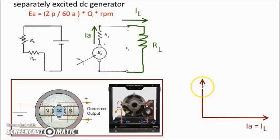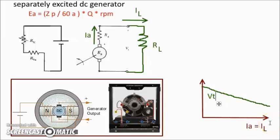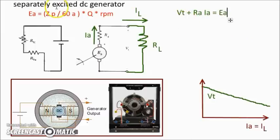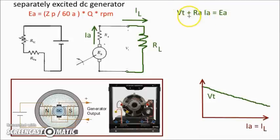We can draw changes in voltage as we increase load current. When we increase load current, we see that the terminal voltage drops — this is the terminal voltage characteristic. When using Excel to draw Vt versus IL or Ia, from the equation we expect Vt + Ra × Ia to equal Ea. Ra is around 8 ohms, which you can measure. So when we add Vt + Ra × Ia, we end up with a certain result.